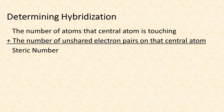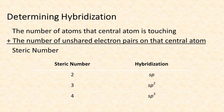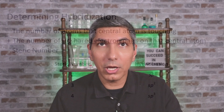Something else you really need to know is how to determine the hybridization of any central atom in a molecule. The formula is: count the number of atoms that the central atom is touching, and add the number of unshared electron pairs on that central atom. That sum is called the steric number. A steric number of 2 corresponds to sp hybridization, 3 is sp2, and 4 is sp3. They won't give you that information on the exam, but you need to know how to do it.